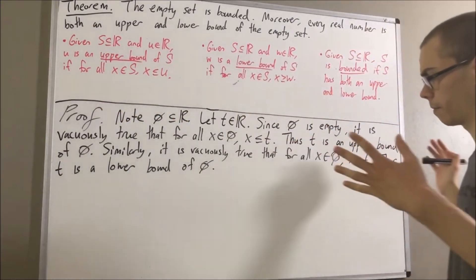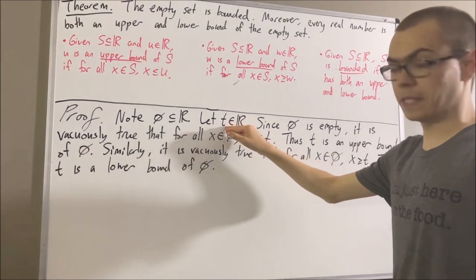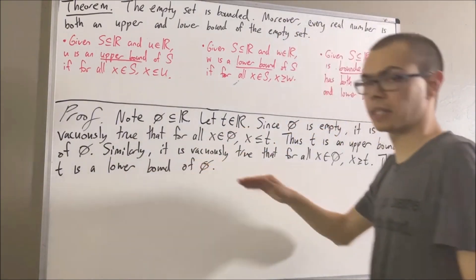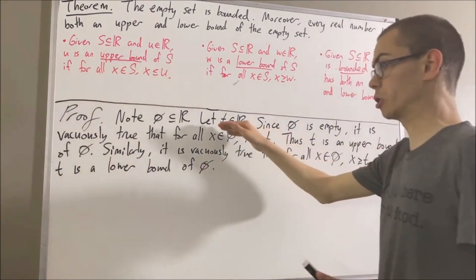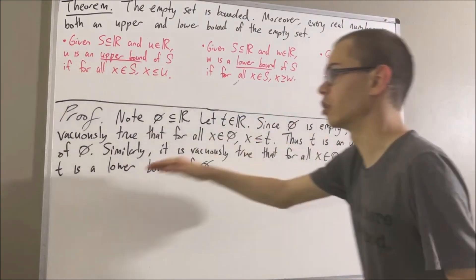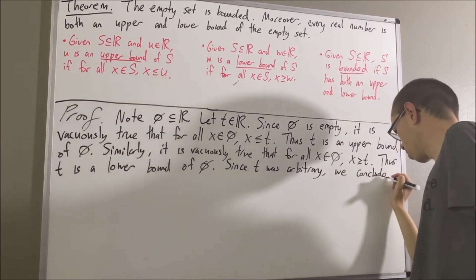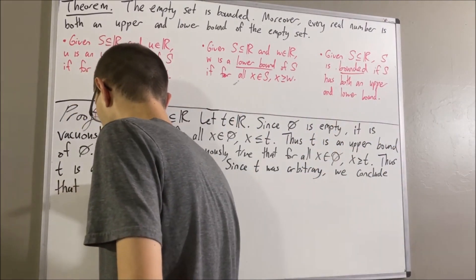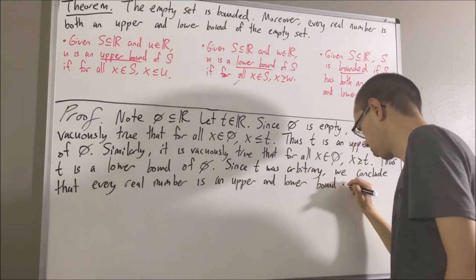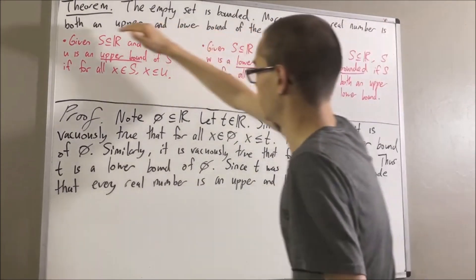So, what have we done here? Well, we have shown that given a real number t, we have that t is both an upper and lower bound of the empty set. Since t was arbitrary, this means that every real number is an upper bound and lower bound of the empty set. So we have shown that this second part is true.